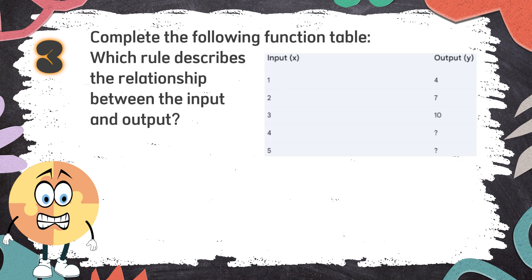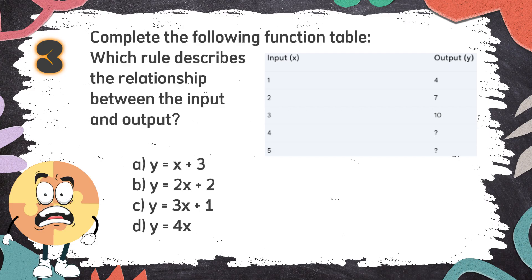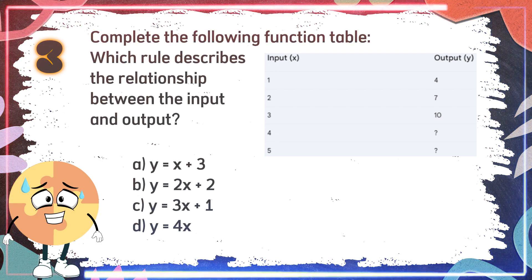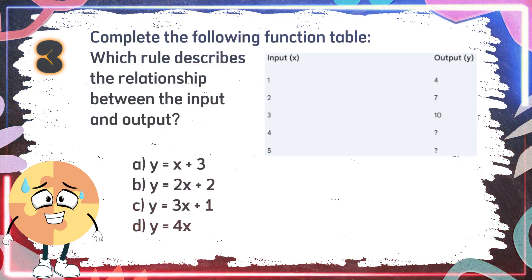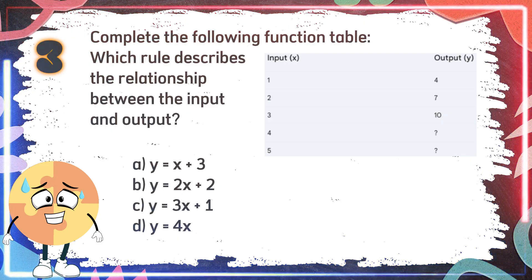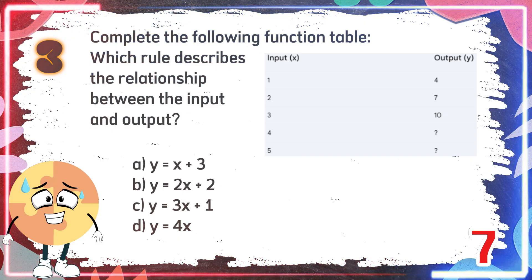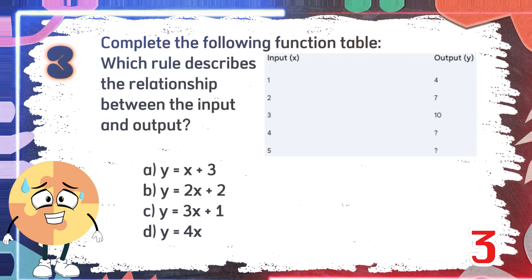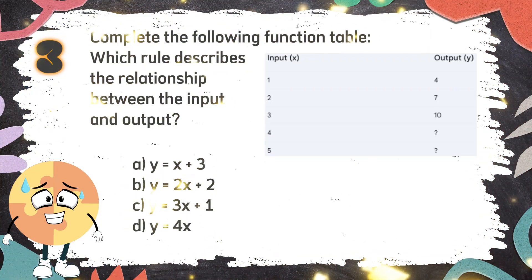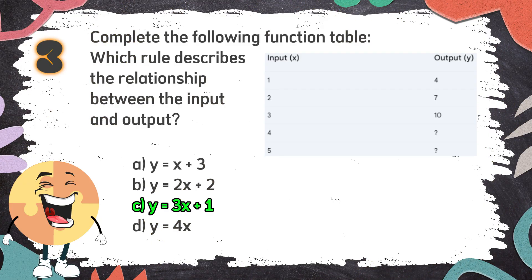Number 3. Complete the following function table. Which rule describes the relationship between the input and output? The choices are: A. Y = X + 3, B. Y = 2X + 2, C. Y = 3X + 1, D. Y = 4X. The correct answer is C. Y = 3X + 1.